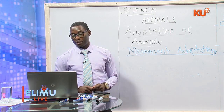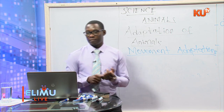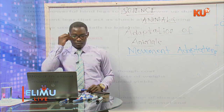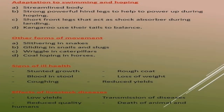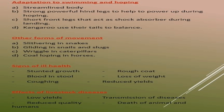Adaptations to hopping: the animal has a streamlined body for movement, and strong powerful hind legs that enable the animal to power up before hopping. The front legs are short so they can act as shock absorbers during landing. Kangaroos also use their tails for balance.